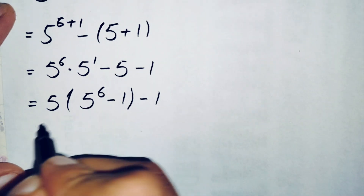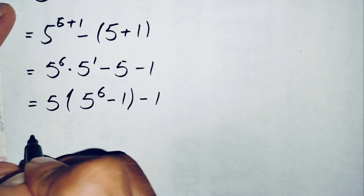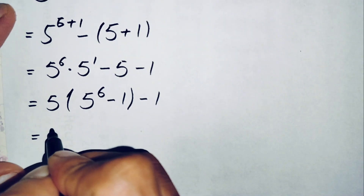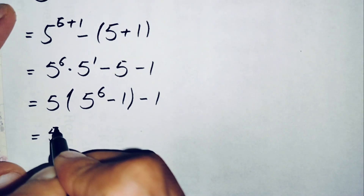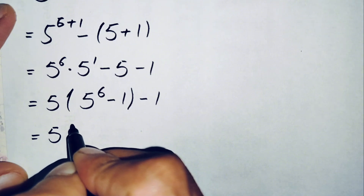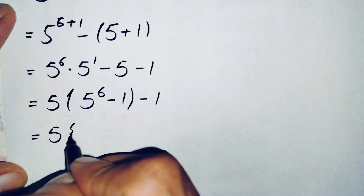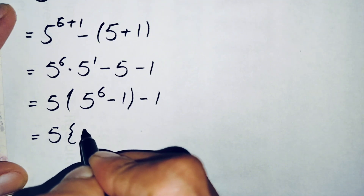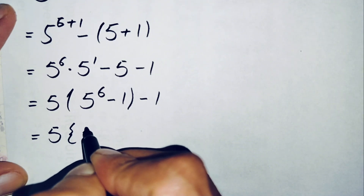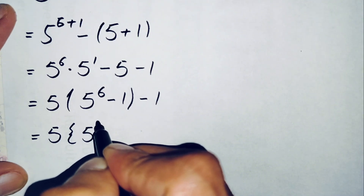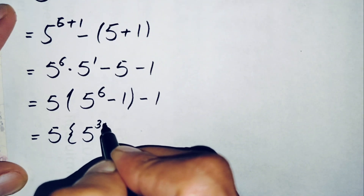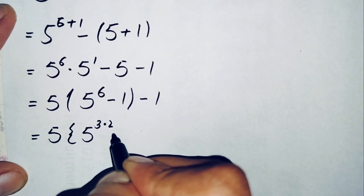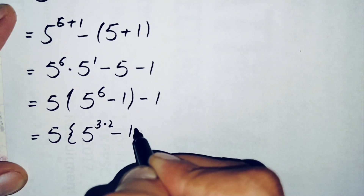Next, we change the exponent 6 to the product of 3 times 2. The equation then becomes 5 times (5 raised to power 3 times 2) minus 1.